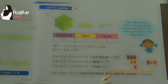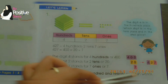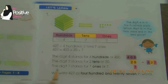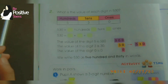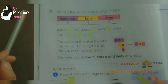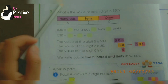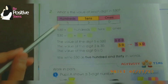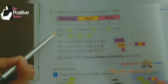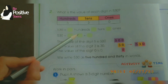We write 427 as 'four hundred and twenty seven' in words. This is the numeral form of place value whereas this is the word form of place value. Moving towards page number seven, question number two: what is the value of each digit in 530? First we have to look at the number 530 and elaborate each digit as hundreds, tens, or ones.